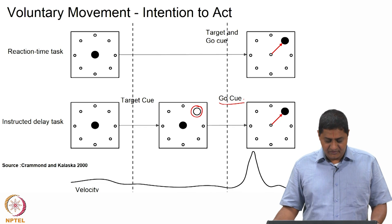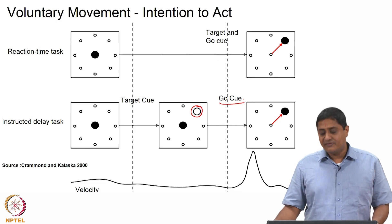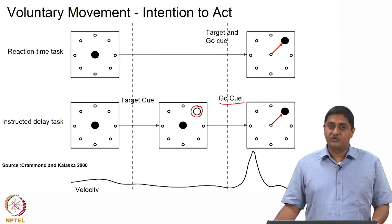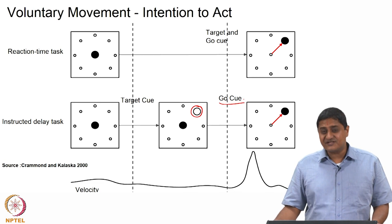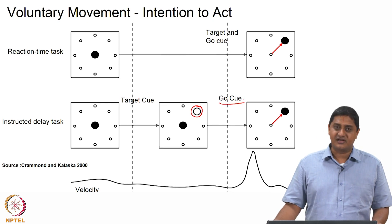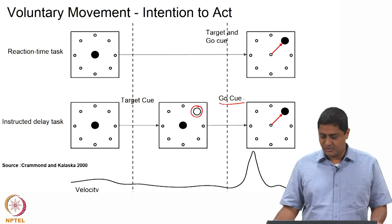In an instructed delay task, the target is first presented and then the go cue is presented. What you see is that specific sets of neurons are active when the target is presented, and a different set of neurons are active during the go cue and the actual movement.